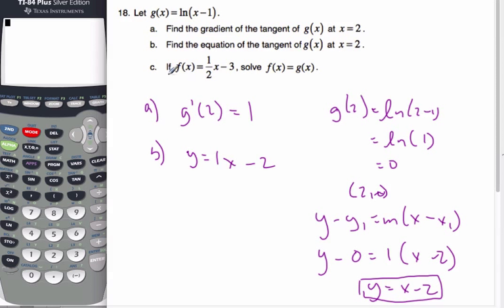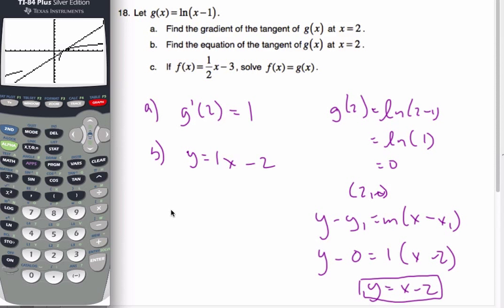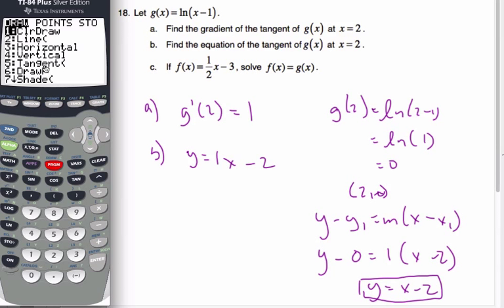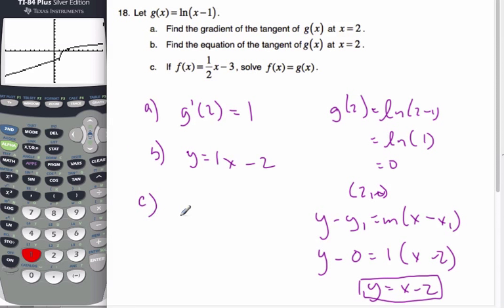Then finally it says, if f(x) is this equation and g(x) is that, find the intersection. Again, I'm going to use my calculator. I'll enter 0.5x - 3 and graph those. I'm going to clear my drawings. And I can see exactly what I'm looking for.